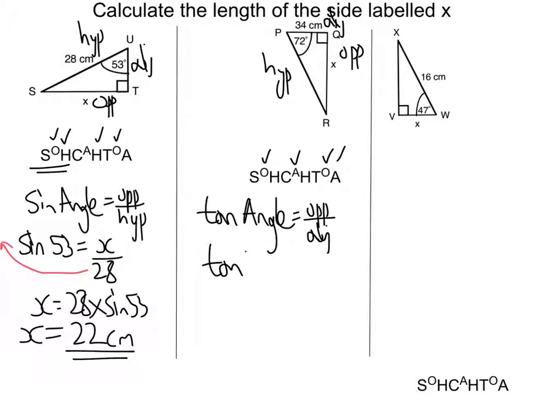Once I've written that, then I need to put my values in. The angle is 72, the opposite is x, and the adjacent 34.